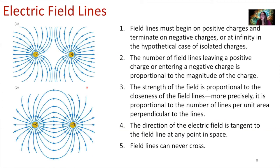Now we have rules for drawing these electric field lines. Here are five of them. First, all field lines must begin on positive charges and terminate on negative charges. The field line is always pointing away from positive charges and pointing toward negative charges.